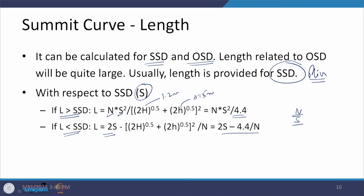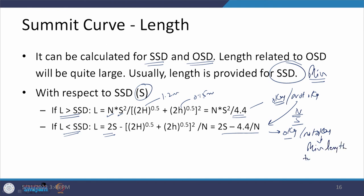When calculating values using these two equations, there may be a situation where neither condition is satisfied. If one is satisfied, the corresponding length L is accepted. If neither is satisfied, we must go to the minimum length requirement — checking the change of gradient, the design speed, and the corresponding minimum length to be provided. This is the overall procedure to be adopted.